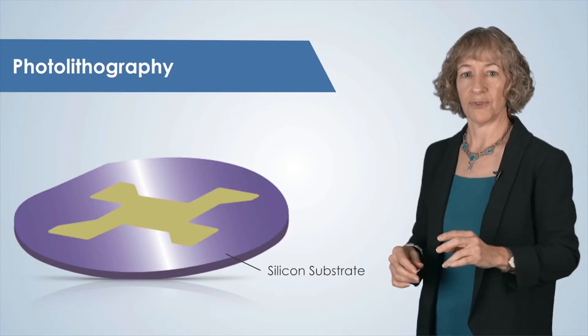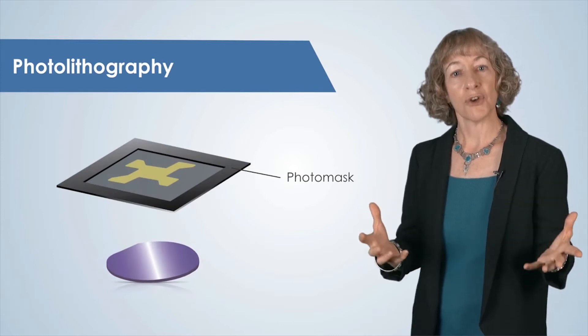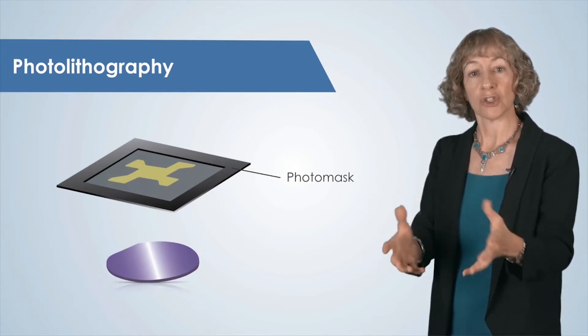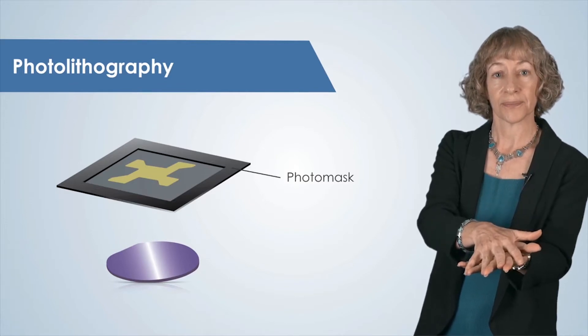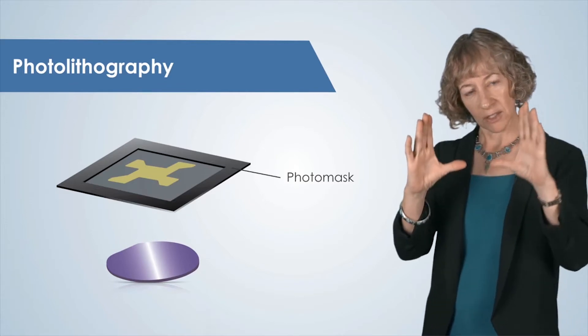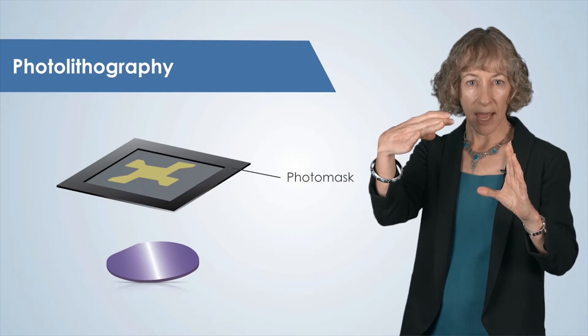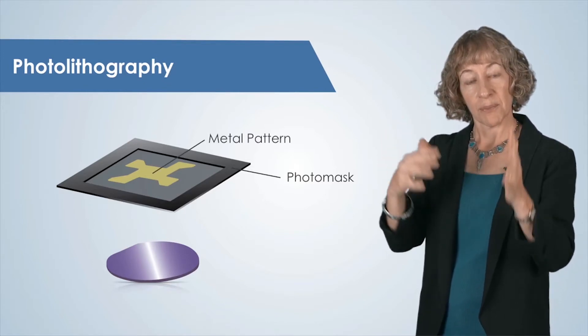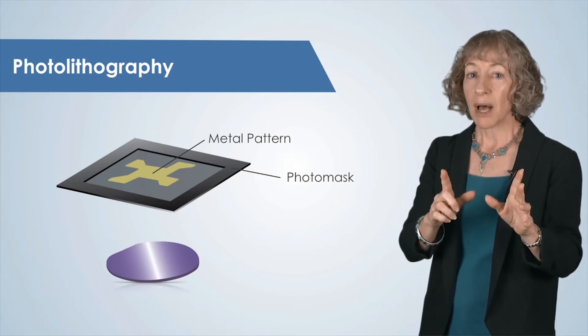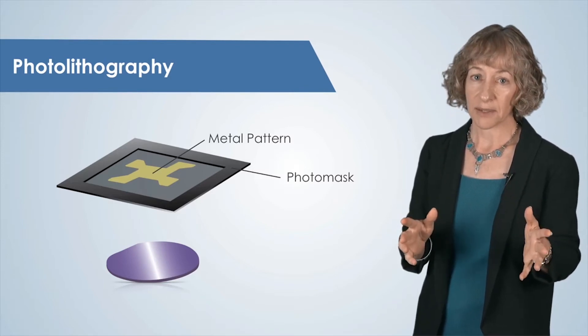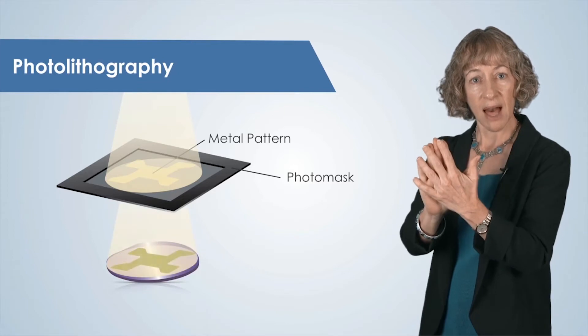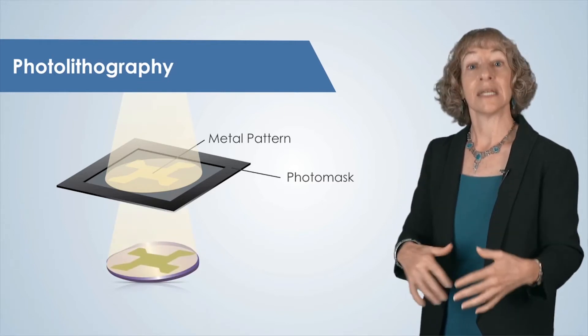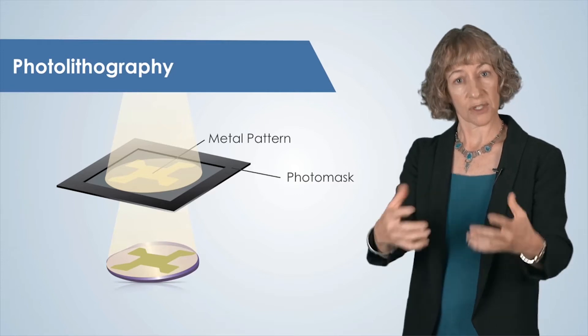A key component in photolithography is the photomask or mask that has the pattern we want to transfer to the wafer. A photomask is a transparent plate, usually glass or quartz, that has a thin metal pattern. The mask is transparent to light everywhere but where the metal lies on the mask. This metal will block the light that patterns the substrate, and so the metal is the pattern that we transfer to the substrate.